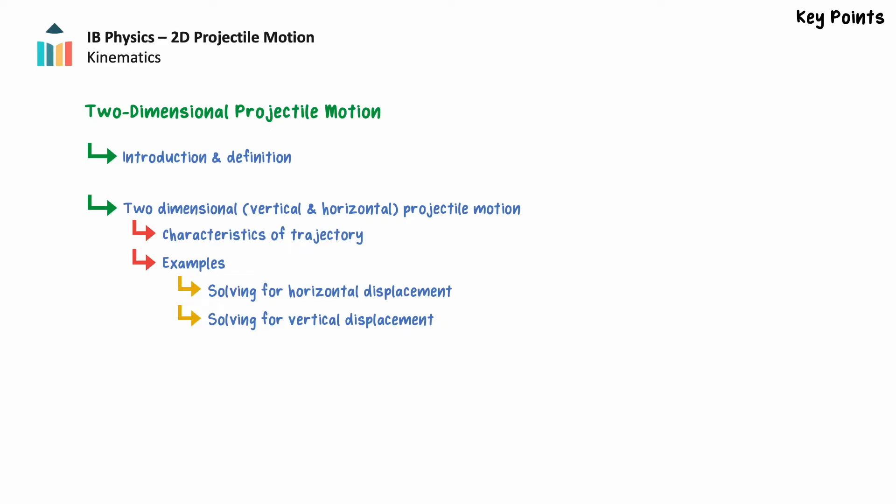In this video we'll introduce and define projectile motion, then explore two-dimensional projectile motion in detail. We'll examine the characteristics of the trajectory of two-dimensional projectiles and apply this theory to two examples, solving for the projectile's horizontal displacement and for the projectile's vertical displacement in an applied problem.